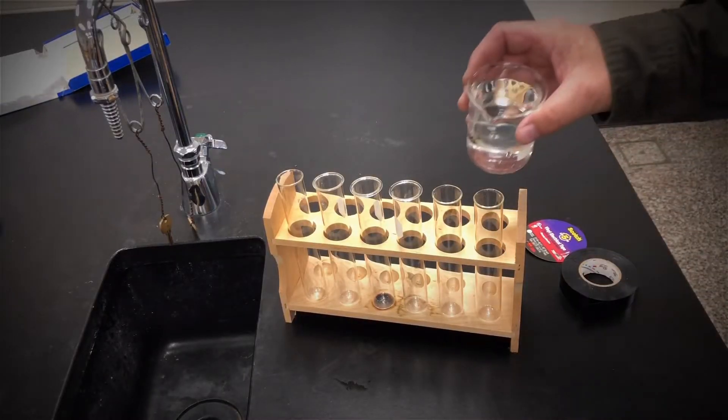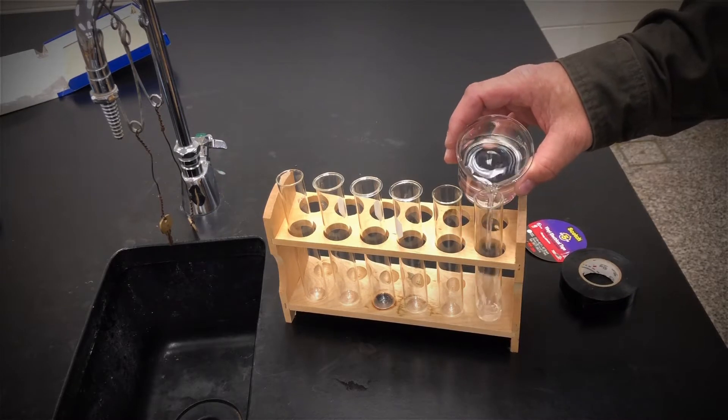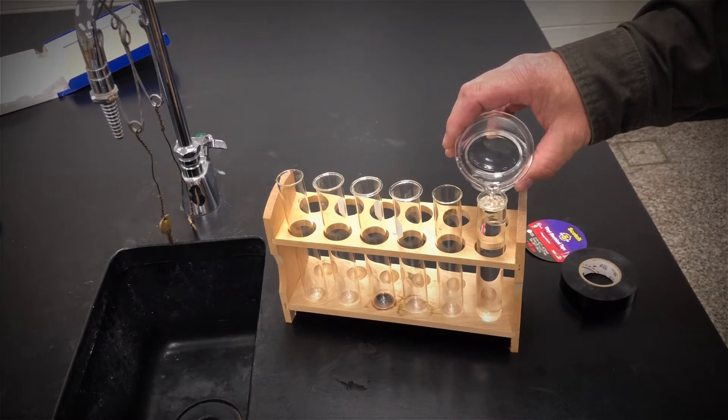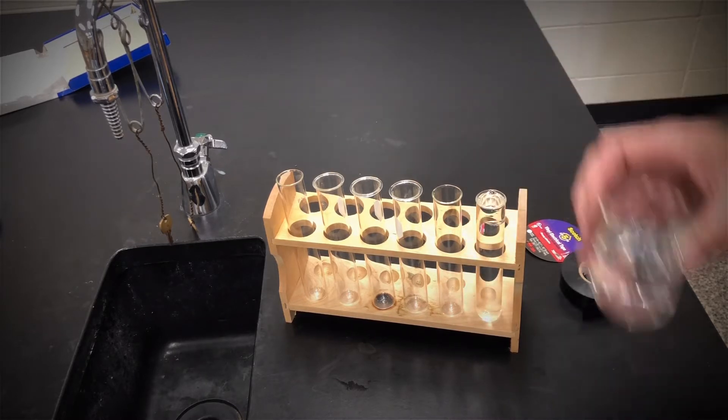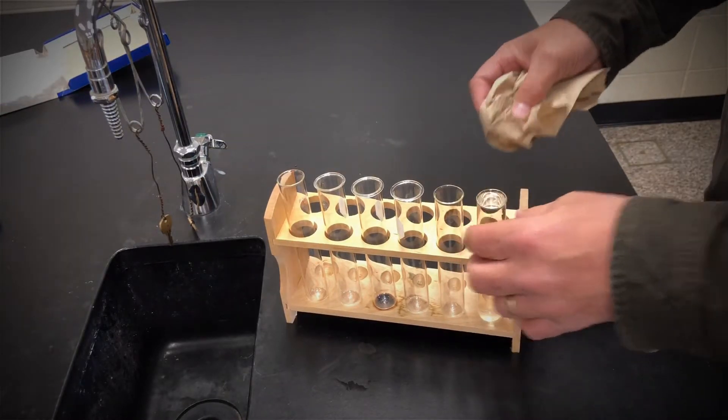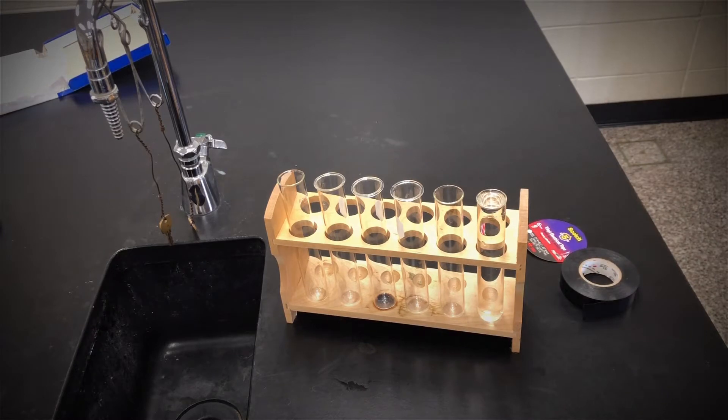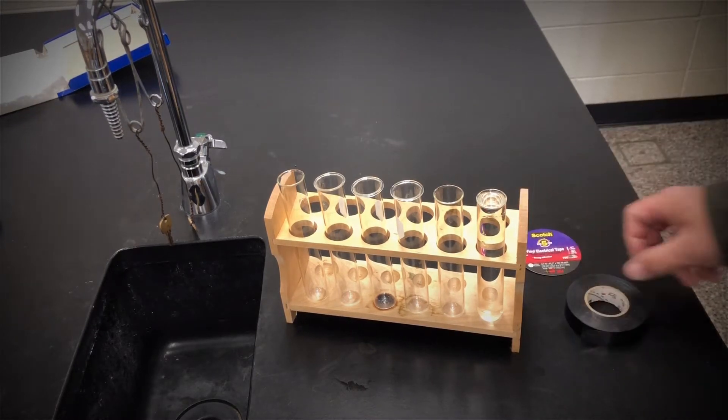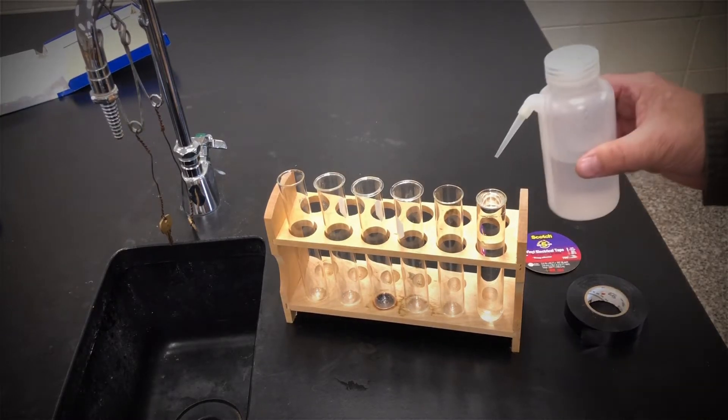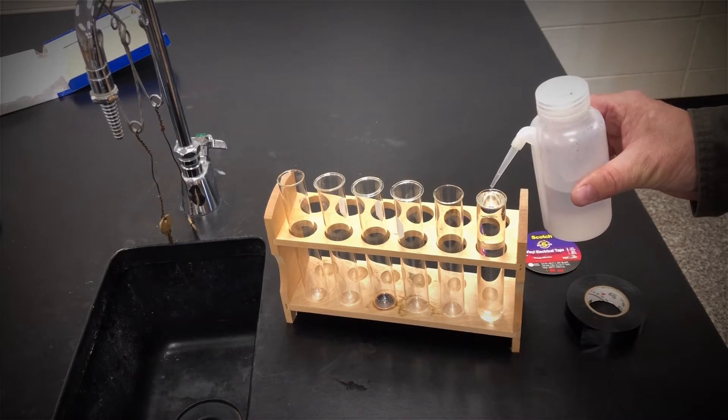Our next step is to fill this all the way to the top. We're going to wipe off the rim just a bit so that the tape will adhere. We have some pretty good tape. I like to use the good tape, the Scotch electrical tape, so that it doesn't leak any gases out.